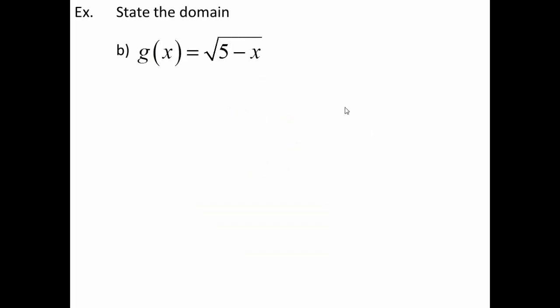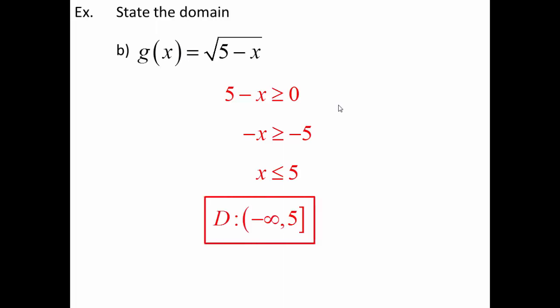This time we have a square root. My rule for square roots is that the inside has to be greater than or equal to zero — it can't be negative. So I'll say 5 minus x is greater than or equal to zero. Solving for x: subtract 5 from both sides and divide by a negative, which flips the inequality. That means x is less than or equal to 5, so we have an interval from negative infinity up to 5, closed on 5.